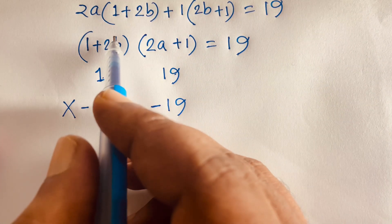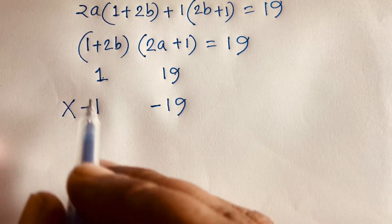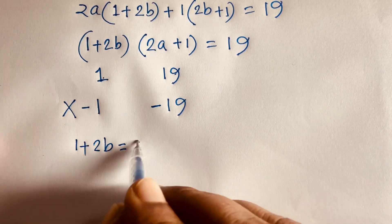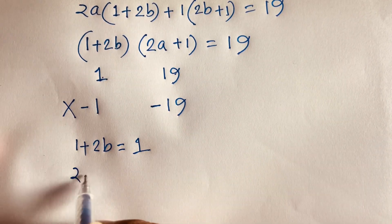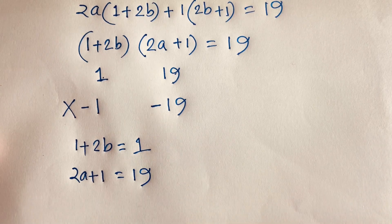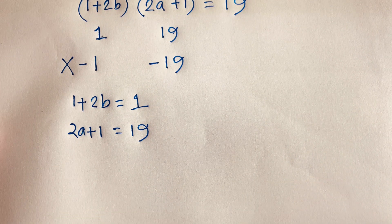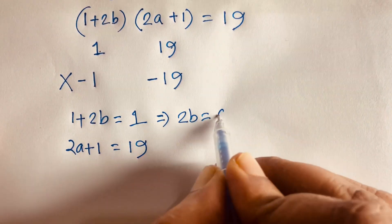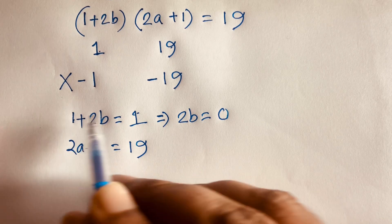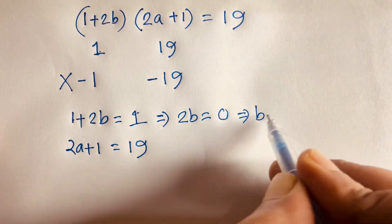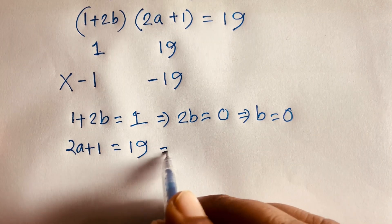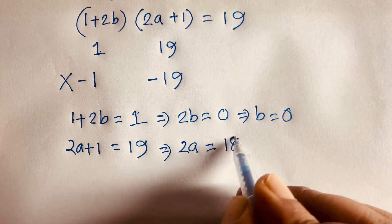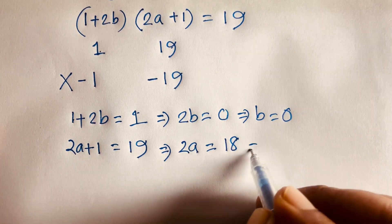So we set 1 plus 2b equal to 1 and 2a plus 1 equal to 19. From the first equation, 2b equals 0, so b equals 0. From the second, 2a equals 18.